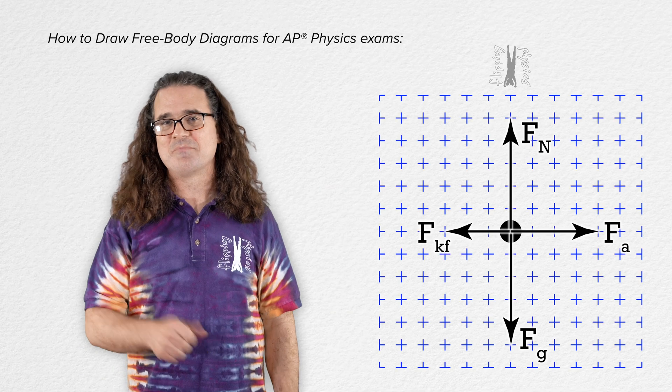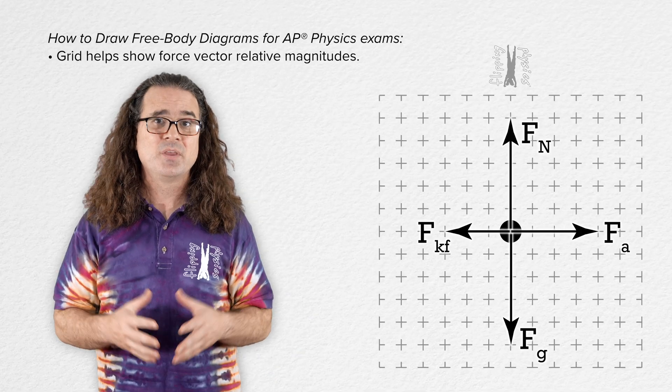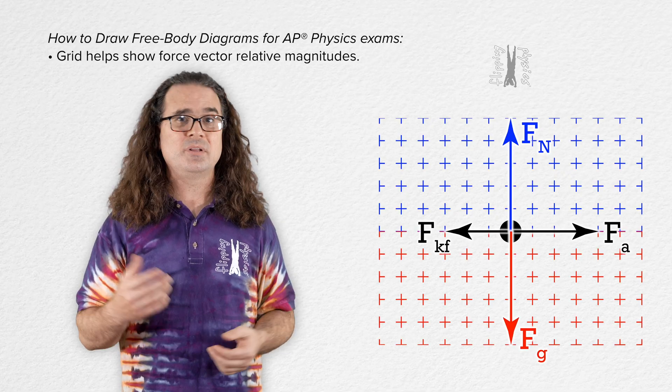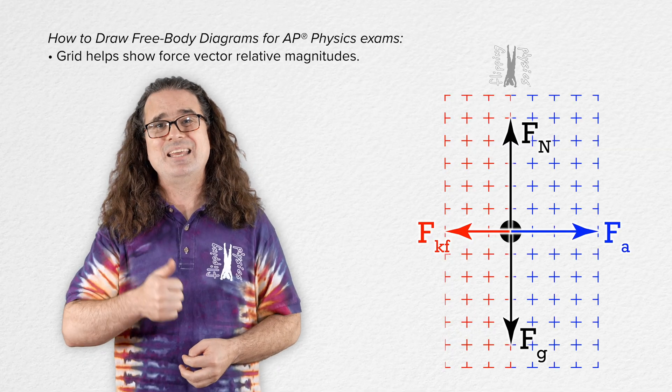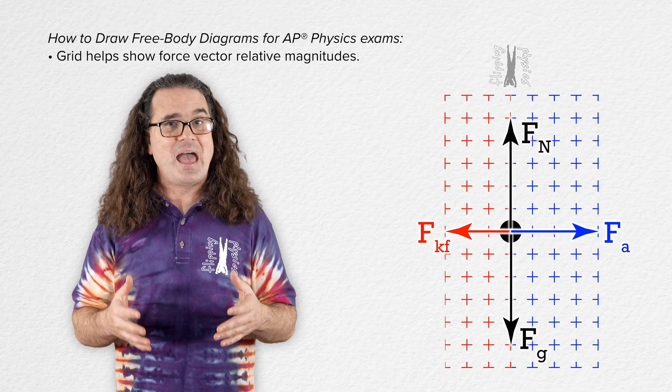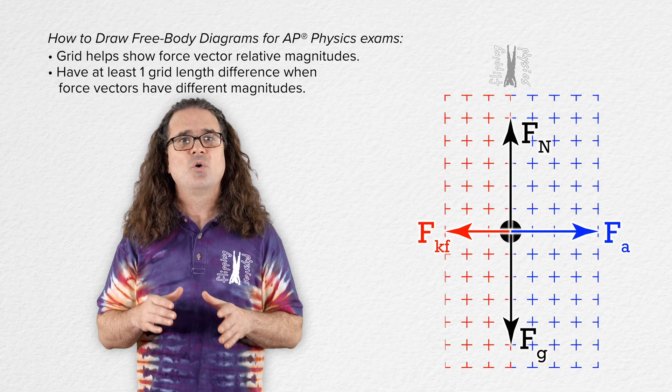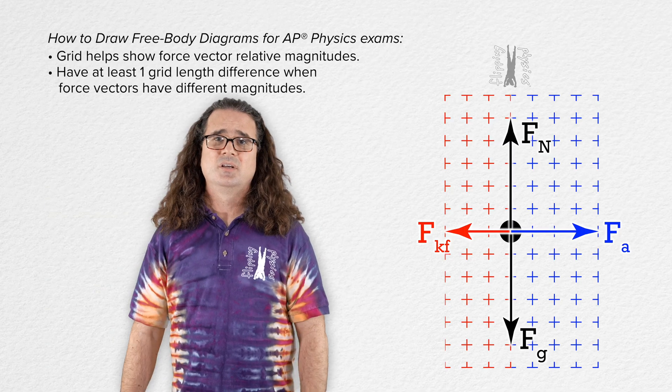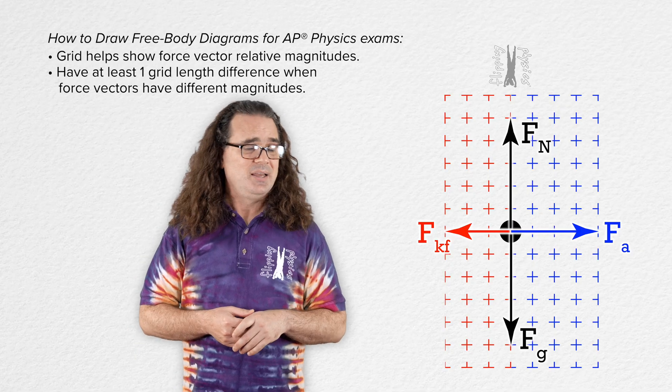Now let's talk about the grid for a moment. The grid is there to help you be able to show the relative magnitudes of your force vectors. For example, you can see in this free body diagram, the force normal and force of gravity are both five grid spaces in length, and therefore the force normal and force of gravity are equal in magnitude. You can also see that the force of kinetic friction is three grid spaces in length. However, the force applied is four grid spaces in length. Therefore, the force of kinetic friction has a smaller magnitude than the force applied. That is why the grid is there. I suggest that you always have at least one grid length difference between two force vectors when you are trying to show they are different. Really? Yes, really. I mean it. It is so easy to do. Just have at least one grid length difference between any two force vector arrows that have different magnitudes. It is not that difficult.